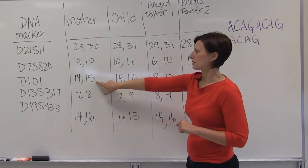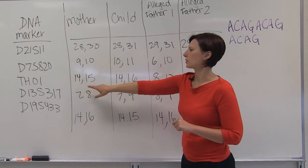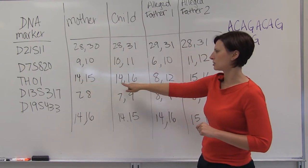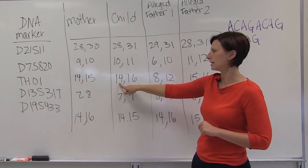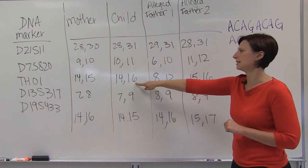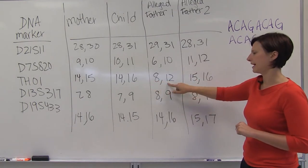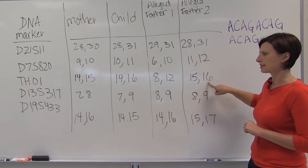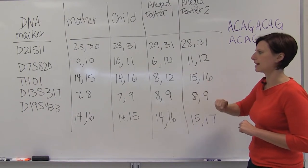When we look at this third locus, mother is 14, 15. The child is 14, 16. So the child had to have gotten its 14 allele from its mother, and we're looking to find out where the 16 allele could have come from. Again, alleged father 1 is ruled out. But alleged father 2 does have a 16 allele and could have contributed that.